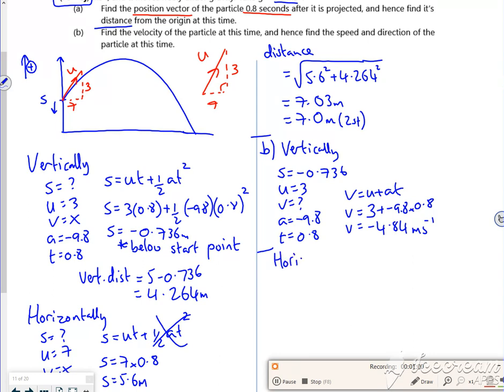Horizontally it's continuous, it's constant. Did we work at it, were we given that speed? 7 isn't it, so V is 7, so the velocity as a vector would be 7 across and minus 4.84, so it's kind of travelling across and going down, or 7i minus 4.84j.